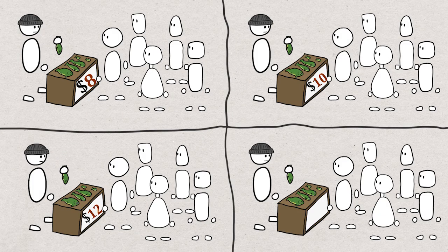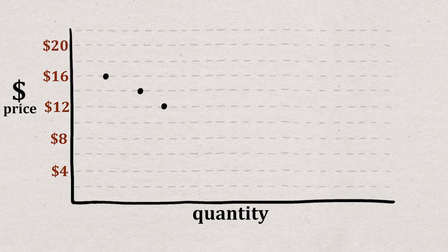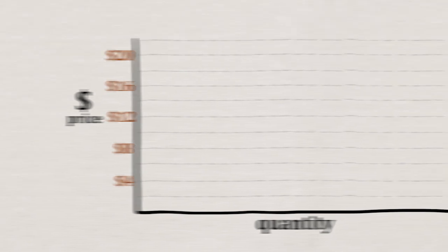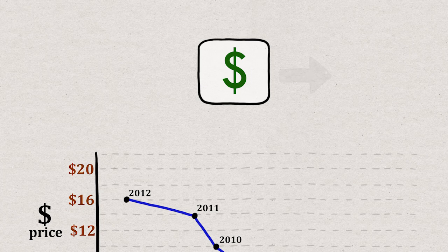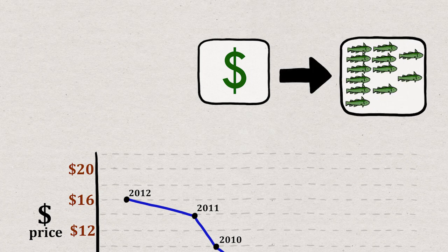In each universe, set the price at a different amount. Then we can just see how much of the good is traded at different prices, and then we have the data to build the demand function. But we don't have multiple universes yet. Can we just plot the quantities sold and the prices from previous years? No.